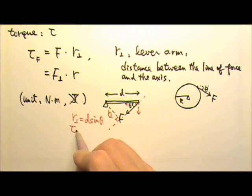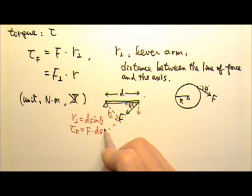That means the torque produced by this force would be force F times the lever arm, D sine theta.